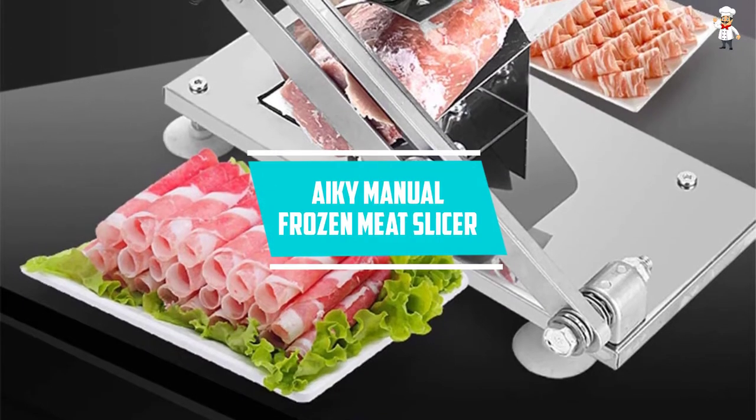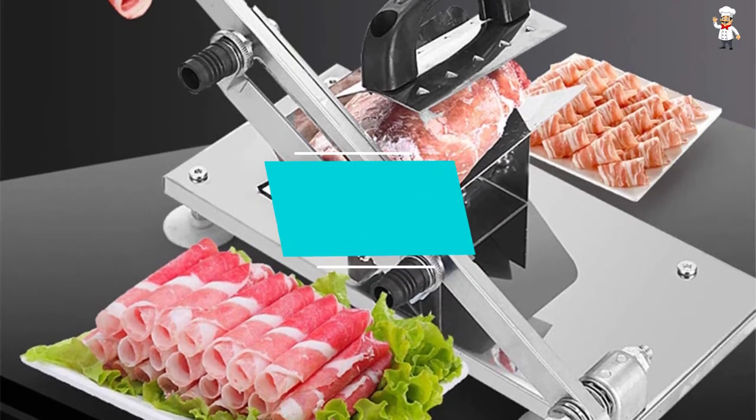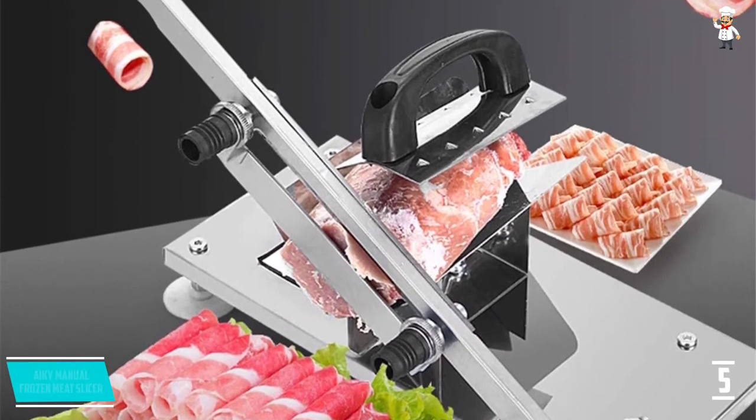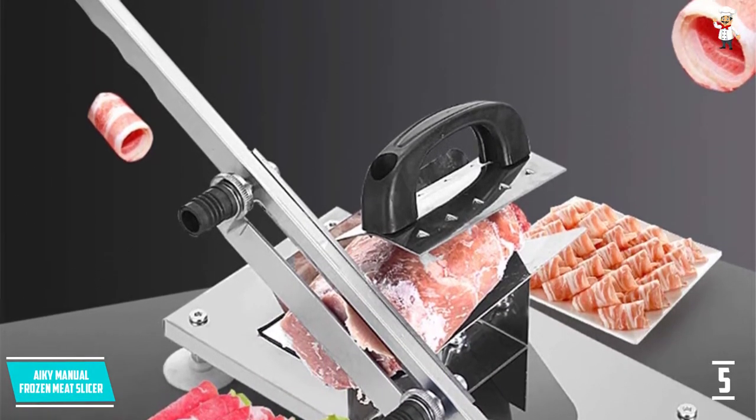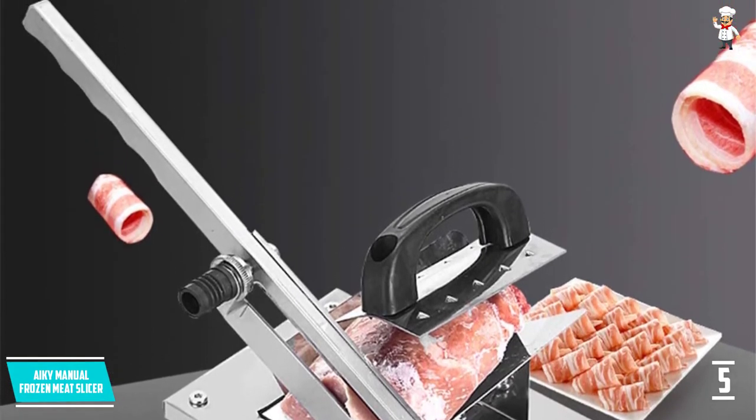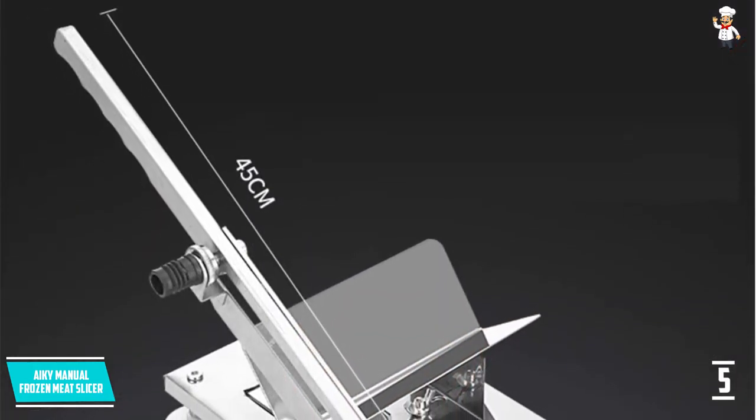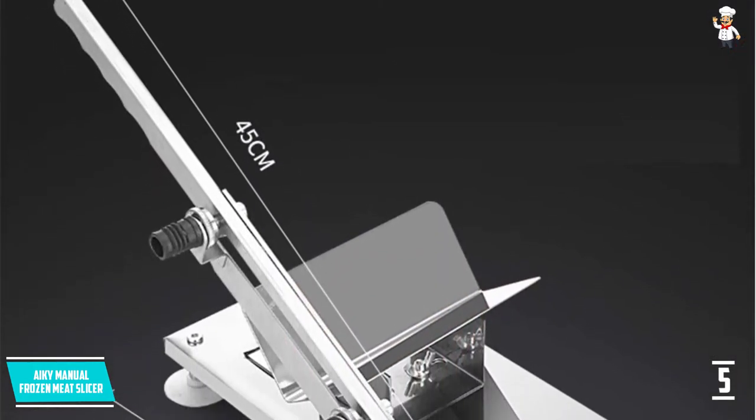At number 5, IKI Manual Frozen Meat Slicer. This is a frozen meat slicer that will be ideal for slicing beef, ham, lamb, fish, and chicken for different purposes. These will include making hot pot and pizza topping. The good thing about this slicer is that the thickness can be easily adjusted from 0.3 all the way to 15 millimeters.